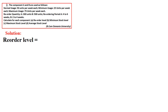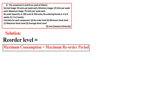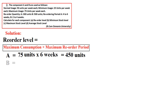Starting with reorder level — formula: maximum consumption multiplied by maximum reorder period. For A: 75 units × 6 weeks = 450 units. For B: 75 units × 4 weeks = 300 units.